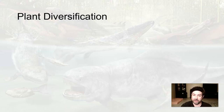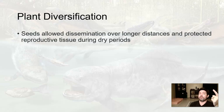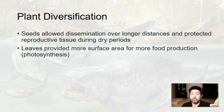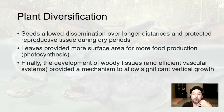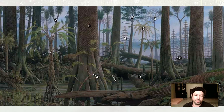Seeds were another adaptation, allowing dissemination over longer distances. Leaves provided more surface area for more photosynthesis — the food-making process for plants. Finally, the development of woody tissues protecting the interior and making a more efficient vascular system allowed trees to grow vertically with more structure and movement of material. So as the Devonian continues, we start getting into forests.